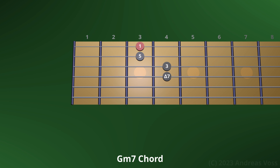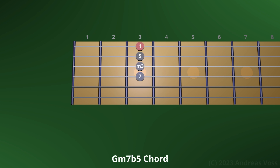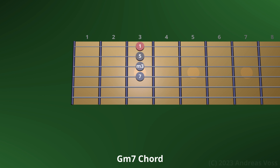Finally, let's construct the minor 7 flat 5 chord. Let's go back to the minor 7th chord first. We construct the minor 7 flat 5 chord by lowering the 5th of the minor 7th chord to the flat 5.